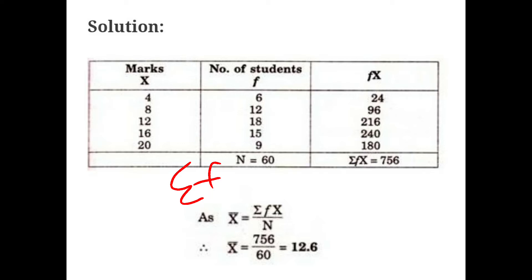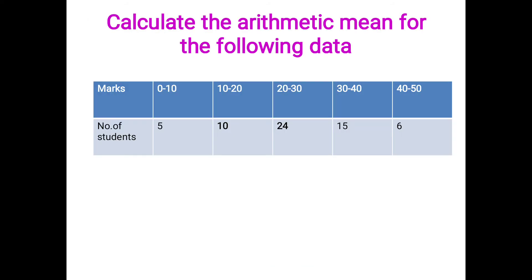756 divided by 60 is equal to 12.6, so the arithmetic mean is 12.6. Next we will calculate the arithmetic mean for continuous data.